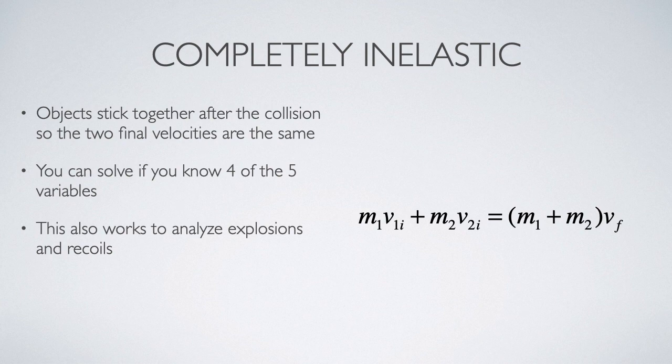In many scenarios, the particles will couple together either before or after the event. You can look at the first two demonstrations from this presentation, where the carts stuck together with Velcro. So in that scenario, the two particles have the same velocity after the collision, so the right hand side simplifies, and now there are only five variables. It can be even more simple if particle number two was at rest at the beginning of the scenario. So that means that cuts out even more variables and makes it easier to solve.